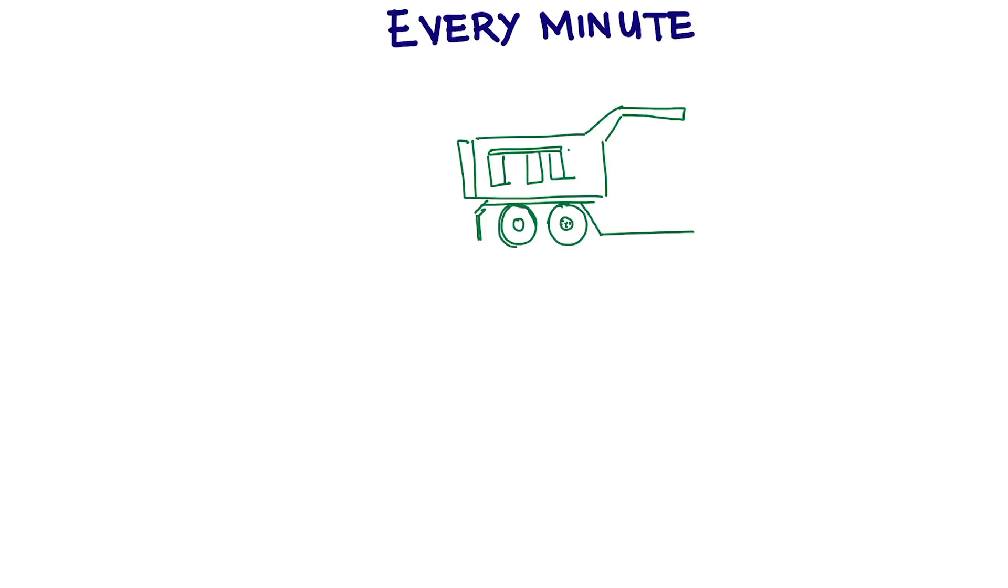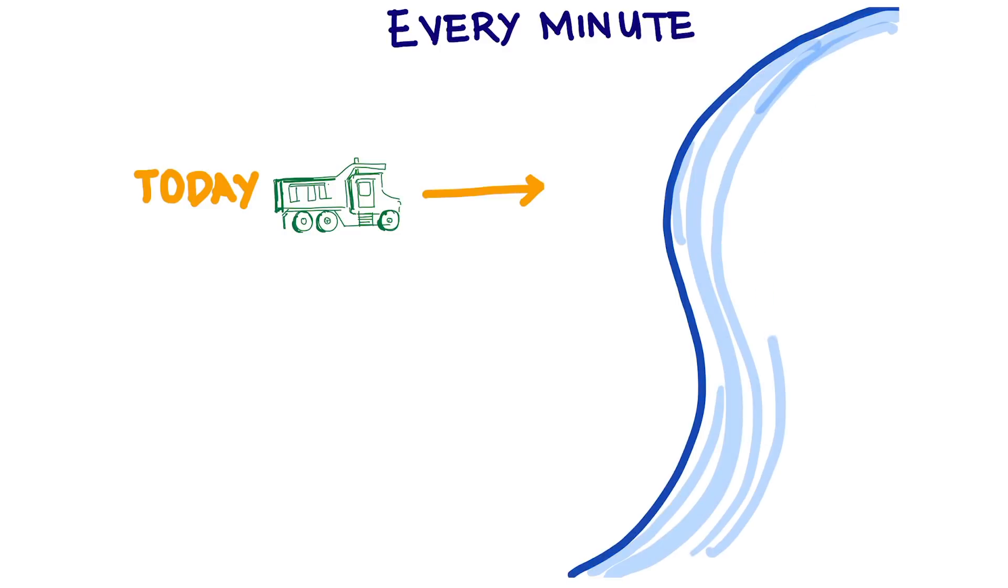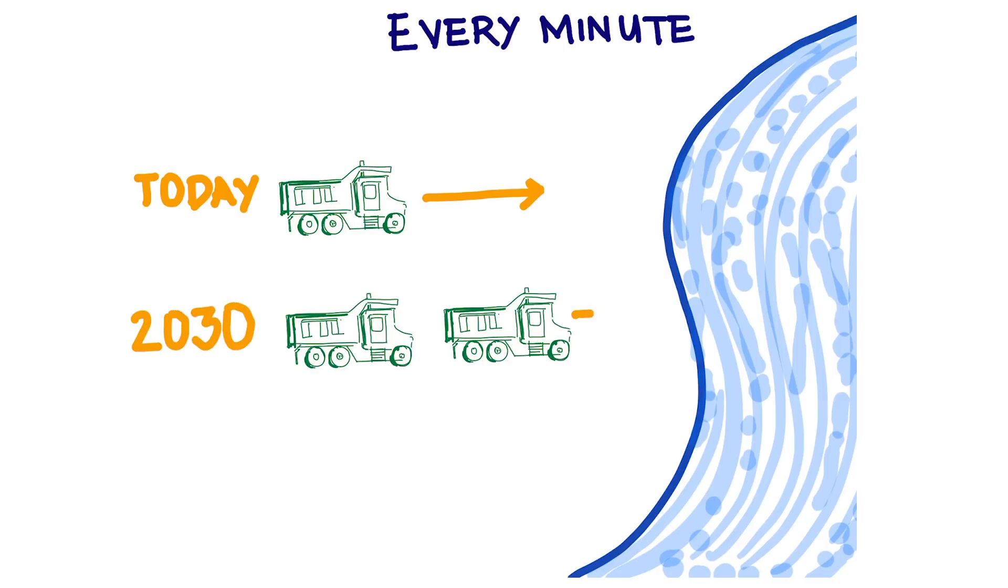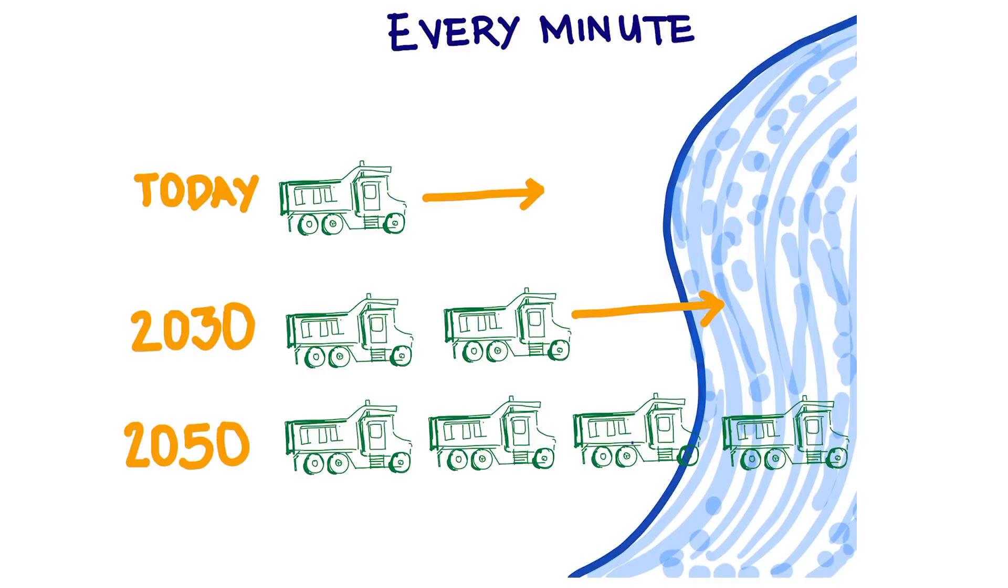That's equivalent to one garbage truck of plastic being dumped into the ocean every minute. By the end of this video, about 10 garbage trucks of plastic will be dumped into the ocean. And if we don't do anything about it, by the year 2030, we'll be doubling the amount of plastics we add to our ocean each year. That's two garbage trucks a minute. And by 2050, we're projected to double again, to four garbage trucks per minute, or one every 15 seconds.